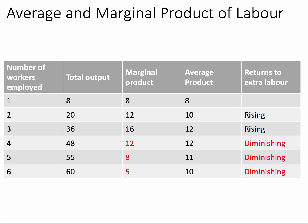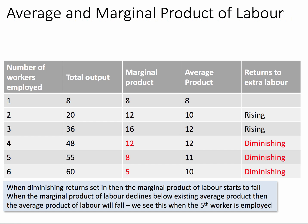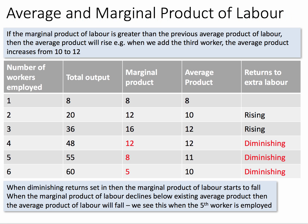In terms of returns to labour, when marginal product is rising, we say there are increasing or rising returns. As soon as it starts to fall, we get diminishing returns to labour. So crucially, when diminishing returns set in, the marginal product of labour starts to contract — starts to get lower. And eventually, the marginal product declines below the existing average productivity, in which case the average product will also start to fall. The fifth worker is when that happens. Conversely, if the marginal product is greater than the previous average, the average will go up from 10 to 12.